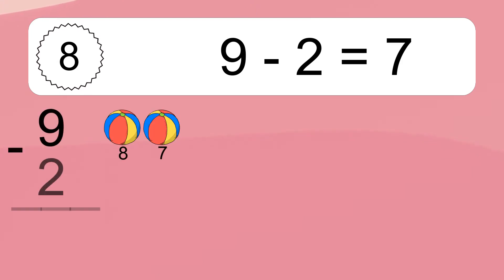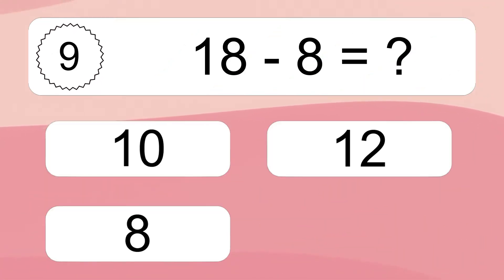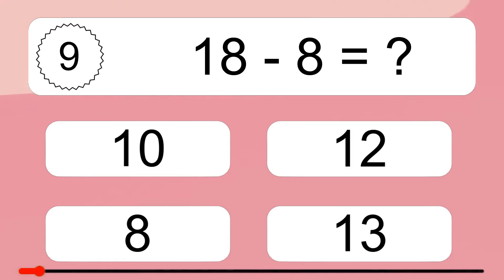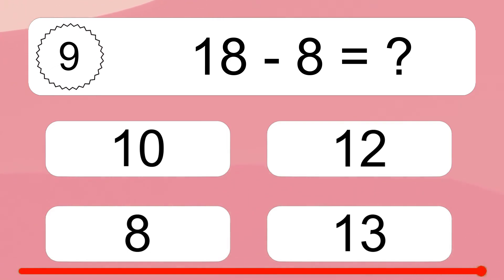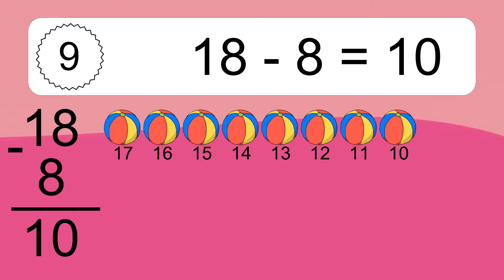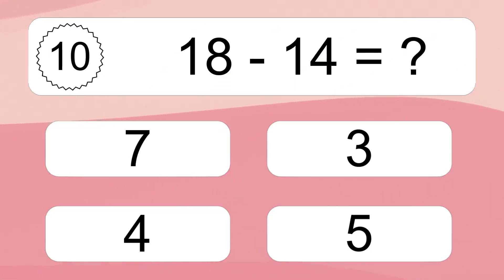9 minus 2 equals what? 9 minus 2 equals 7. Let's count it: 8, 7. 18 minus 8 equals what? 18 minus 8 equals 10. Let's count it: 17, 16, 15, 14, 13, 12, 11, 10.